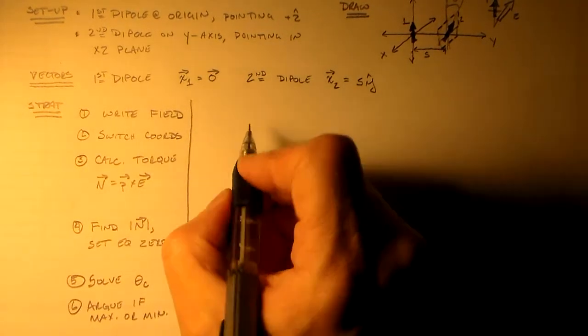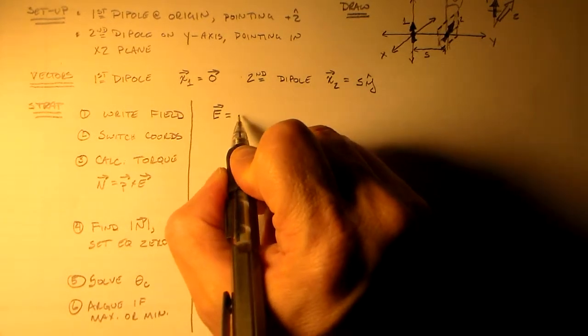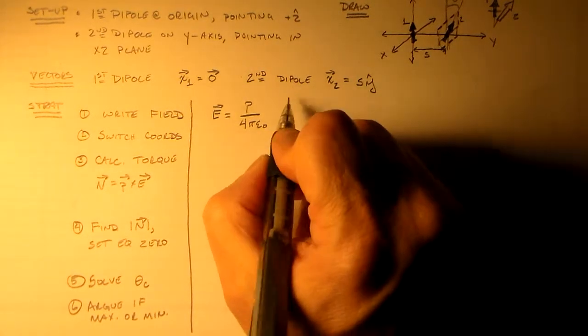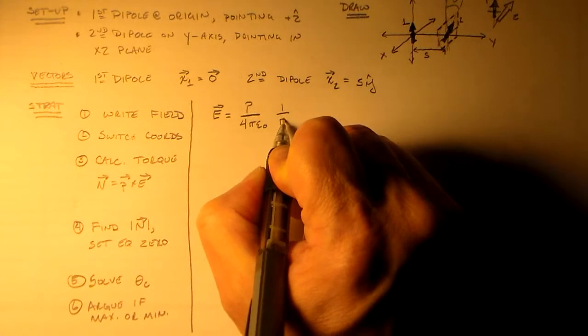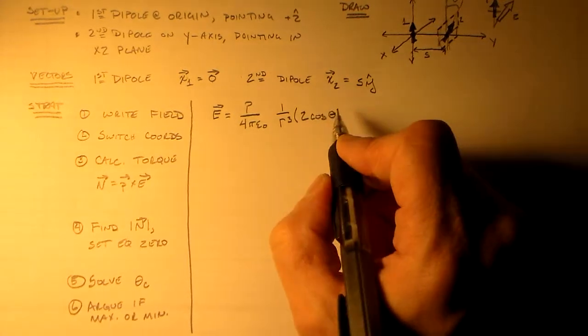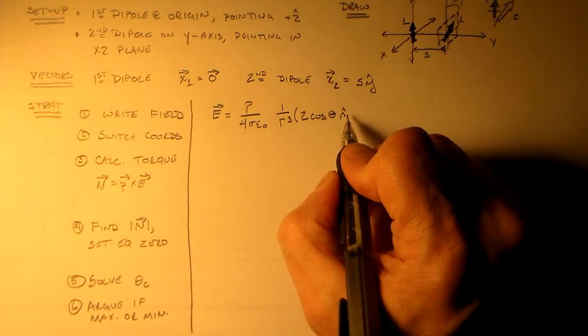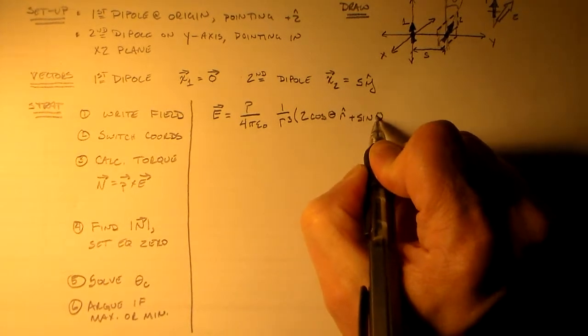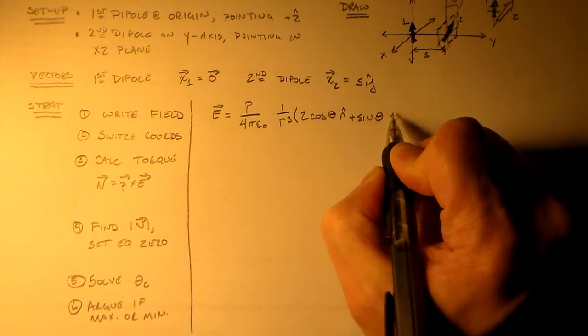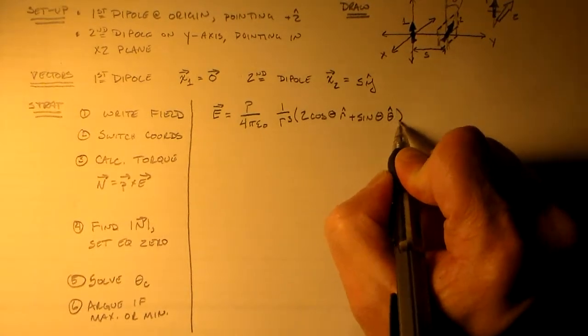So first of all, we write our field. So our field is equal to e, p over 4 pi epsilon naught, 1 over r cubed, 2 cosine theta r hat plus sine theta theta hat. And if we switch to Cartesian coordinates, it gets pretty complicated.